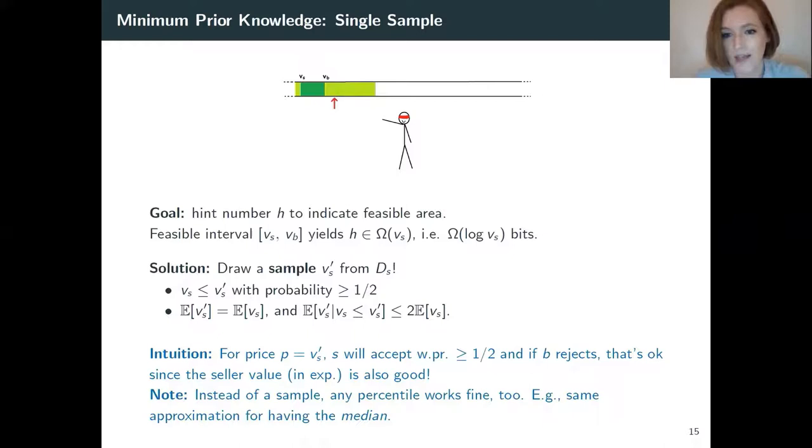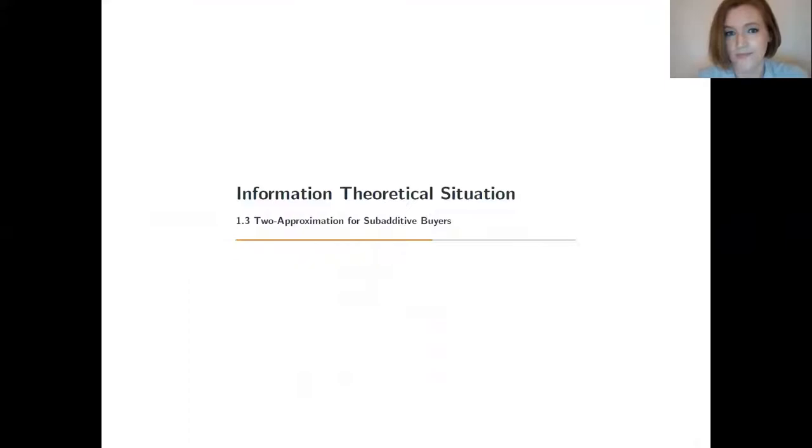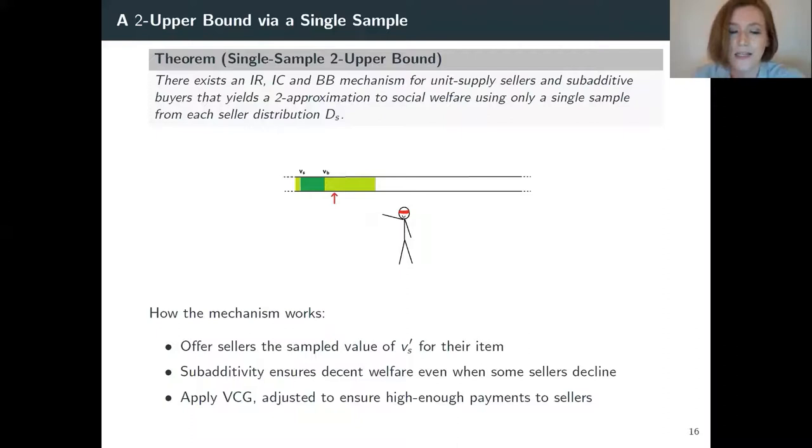Now, note for completion, instead of having a sample, you can use any percentile. So, for example, if you have the median, that works fine, too. We know that we would probably get something constant with using one sample from the sellers. And next, I'd like to show you that we actually get a 2 approximation for very general settings where the buyers are subadditive. Our theorem here is, this gives us a 2 for subadditive buyers and combinatorial assignments. The mechanism does what I described before. It offers the sellers the sampled value. And then we use subadditivity to ensure that there is some decent welfare that we get, even if part of the sellers will reject because their sampled values are too small. And then the idea is to apply the VCG mechanism in an adjusted fashion. And that would ensure that the mechanism collects enough money to pay all the sellers in the end.